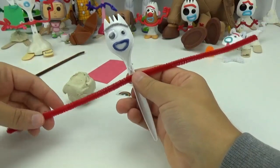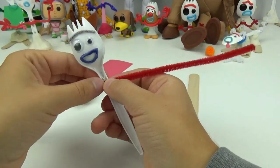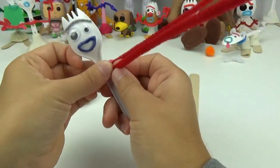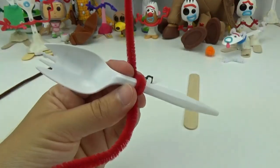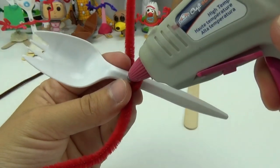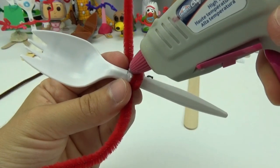With the red pipe cleaner, I will be giving him some arms. I will add a little drop of glue on the back so that this sticks and won't slide around.